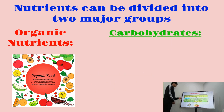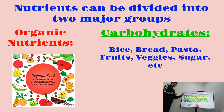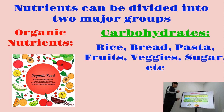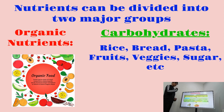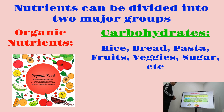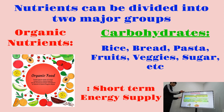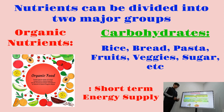First, let's look at carbohydrates. Some examples are rice, bread, pasta, fruits, veggies, sugars, and more. Carbohydrates such as starch from potatoes, flour from wheat, or sugars from fruits and vegetables are energy sources in your body. We need a certain level of carbohydrates to survive — essentially, carbohydrates serve as a short-term energy supply.